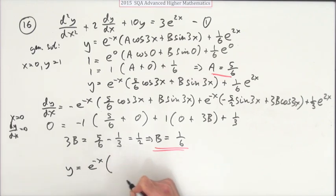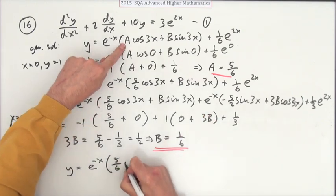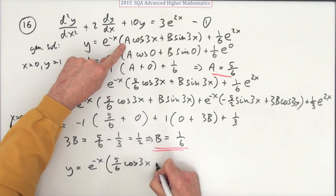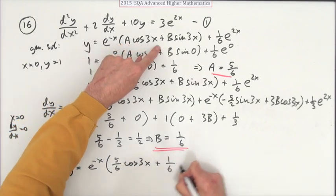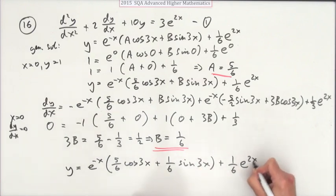y equals e^(-x) times, A was 5/6 of cos 3x, B was 1/6 of sin 3x, and we already had 1/6 of e^(2x).